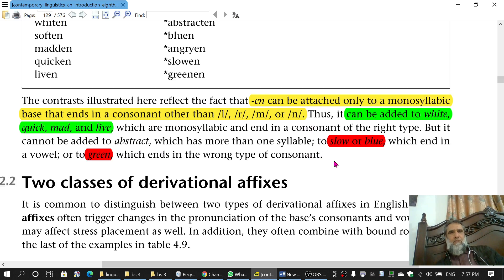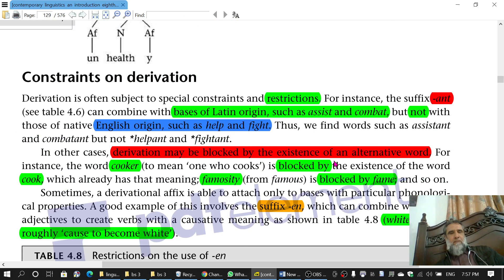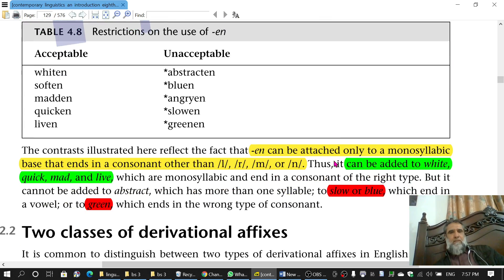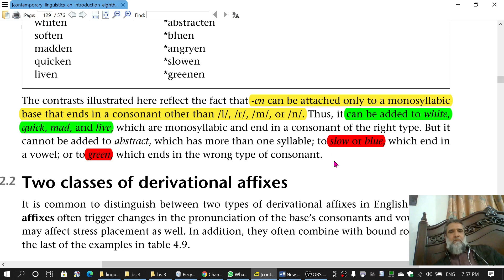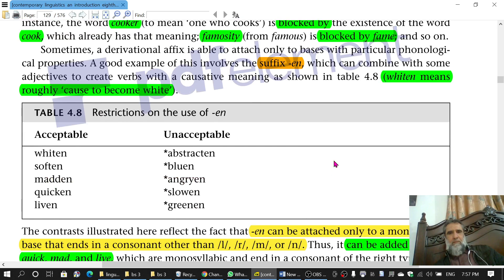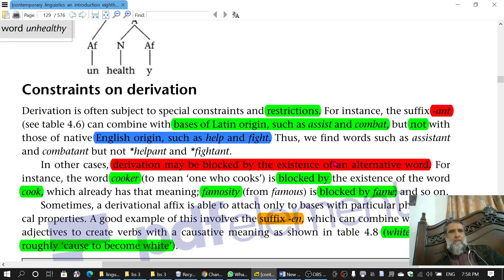So these are three different types of constraints on derivation. The derivation topic is still ongoing and next we will study two classes of derivation. That's all for the time being on constraints on derivation. Thank you and good luck.